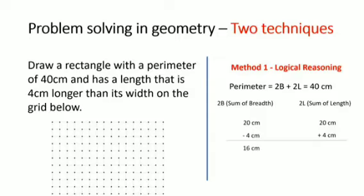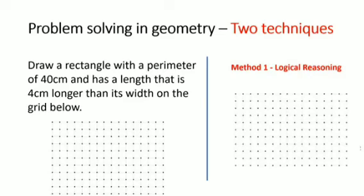This will give me a sum of 16 centimeters, representing the sum of the breadth. This implies that the breadth will be 8 centimeters. Summing the length we will have 24 centimeters, meaning each side representing the length will be equal to 12 centimeters. Upon inspection we can see that the length is indeed 4 centimeters longer than the breadth. Now we can proceed to draw our diagram, and this concludes the solution to the problem.